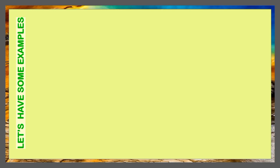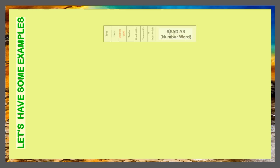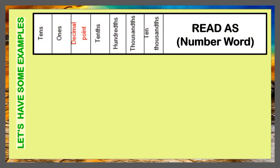Children, let's have some examples on how to read decimal numbers. I have here a place value chart wherein the last column is allotted for the equivalent number word. Let's have the first example.